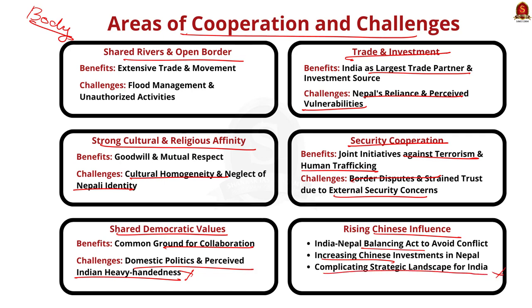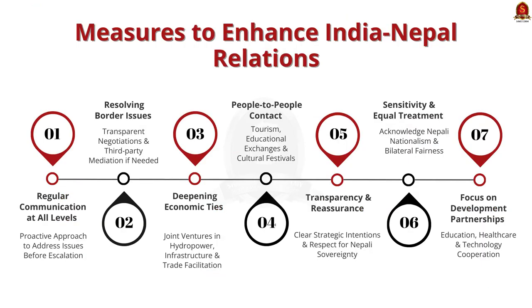With this critical analysis, let us move to the next part of the answer — suggestions to enhance India-Nepal relations. Firstly, establishing more frequent and regular communication at all levels, including at the highest political level, can ensure that small issues are resolved before escalating. Secondly, a concerted effort should be made to address and resolve contentious border issues through transparent, evidence-based negotiation and possibly third-party mediation if necessary. Thirdly, further deepening economic ties through initiatives like joint ventures in hydropower, infrastructure projects, and easing trade barriers can benefit both economies.